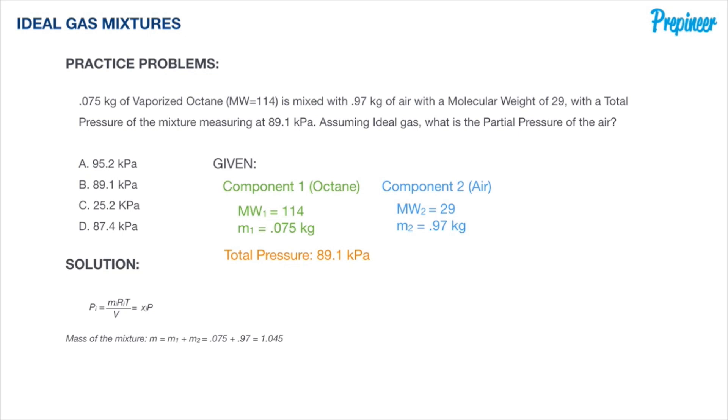Now recall the sum of all the mass fractions adds up to one. So we have the following relationship established: y_1 plus y_2 equals one. The mass of the mixture m is m_1 plus m_2, which is 0.075 plus 0.97, which equals 1.045.